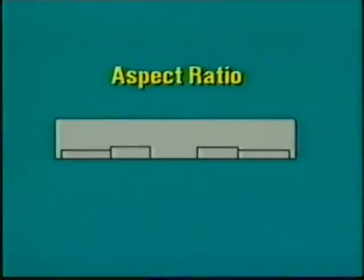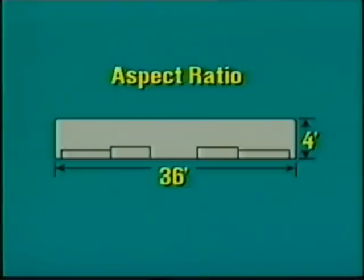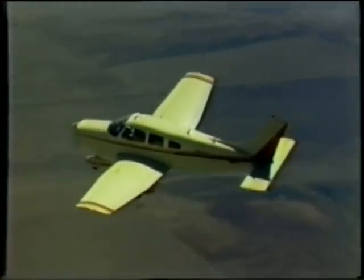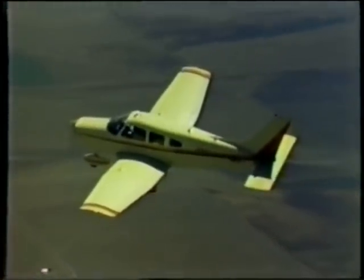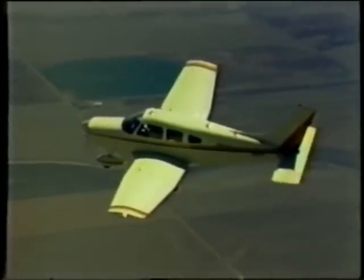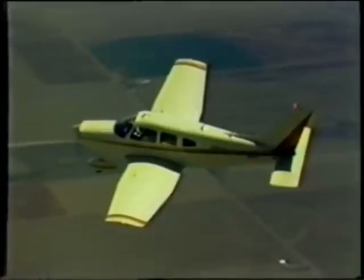The tapered wing, on the other hand, has good slow flight characteristics and has a relatively efficient design. Another wing design factor is the aspect ratio, or the relationship between the wing's length and width. The aspect ratio can be found by dividing the wingspan by the average chord. In this example, the wing has an aspect ratio of nine. At a given angle of attack, the larger the aspect ratio, the less drag produced for the same amount of lift. General aviation training aircraft normally have aspect ratios of seven to nine, while gliders are usually between 20 and 30.